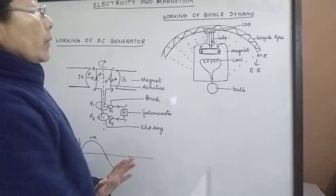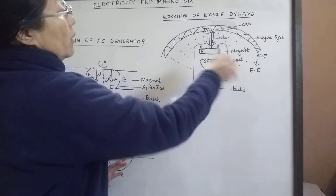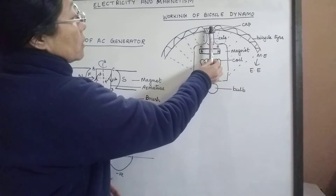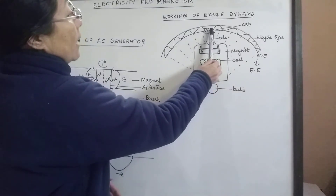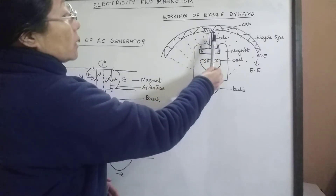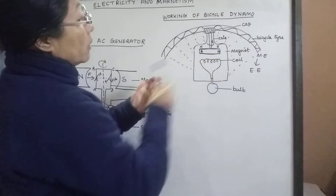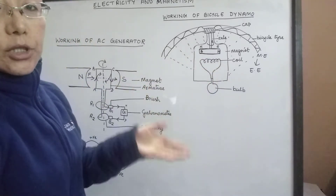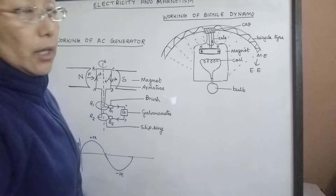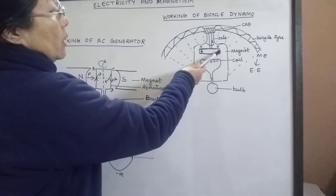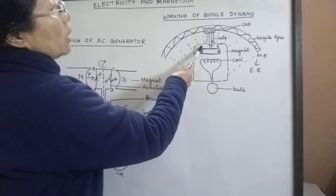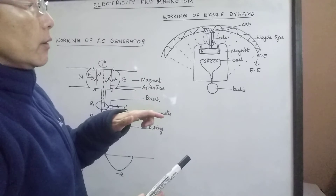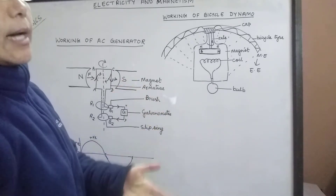When the bicycle starts moving there will be rotation in the tire. This rotation will make the cap rotate, because the cap is in touch with the tire. Rotation of the cap will make the magnet rotate on its own axis. When the magnet rotates there will be a change in magnetic flux — the north pole is over here, then the next moment the north pole will come to the side and the south pole will go over there. So this change in position of the magnet causes a change in magnetic flux.